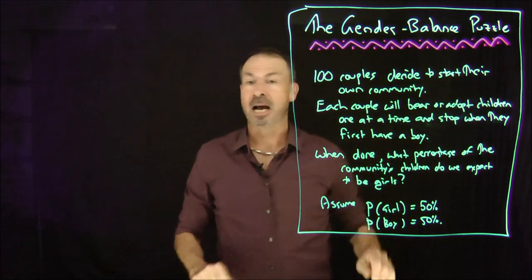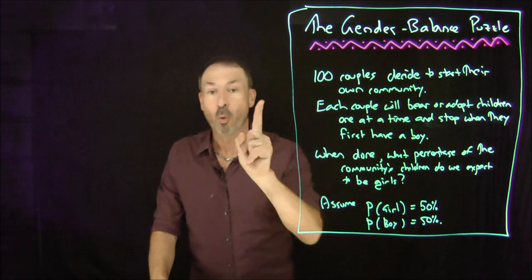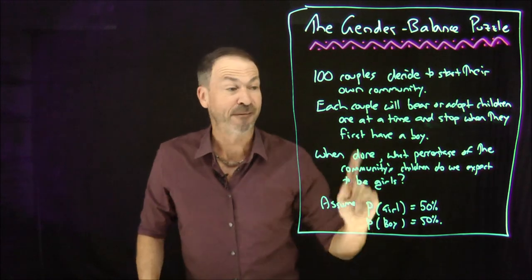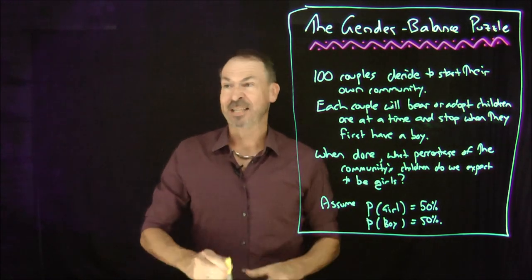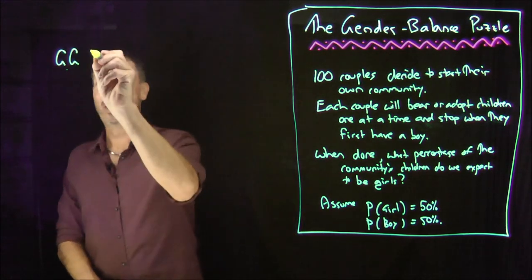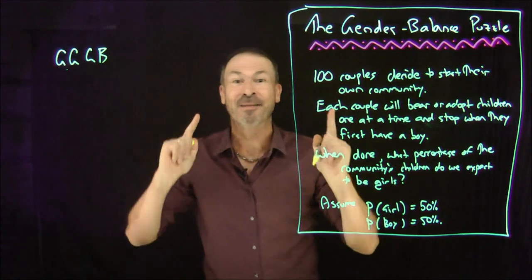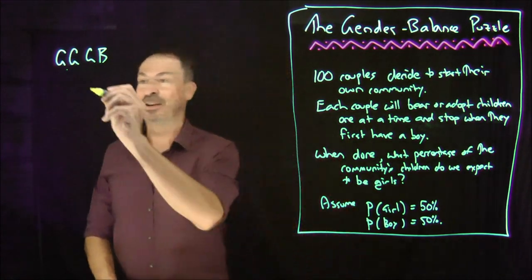It goes as follows. 100 couples decide to start their own community. Each couple will bear or adopt children one at a time and will stop when they first have a boy. So for example, one couple might first have a girl, wonderful, they'll have a girl, fabulous, they'll have a girl, brilliant, they'll have a boy, fabulous, but they'll stop there. As soon as they have a boy, they stop.